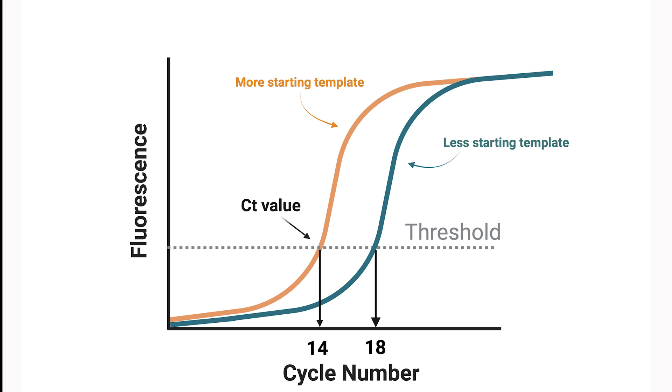The CT value can be used as a measure of the amount of starting template DNA. The more template DNA present at the beginning of the reaction, the quicker the cycle threshold is reached. Put another way, the lower the CT value, the greater the amount of template DNA in the sample.